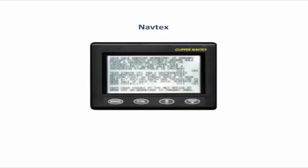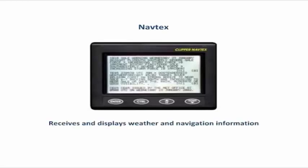Navtex is the part of the GMDSS that provides weather forecasts and navigational warnings. The information is received automatically and displayed in text form on a screen. Modern units operate on two frequencies, one for the local language, and the other for English.